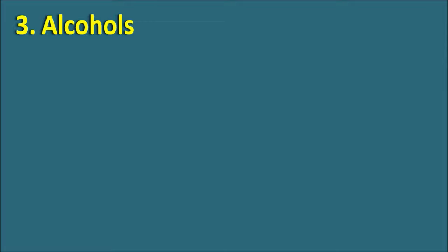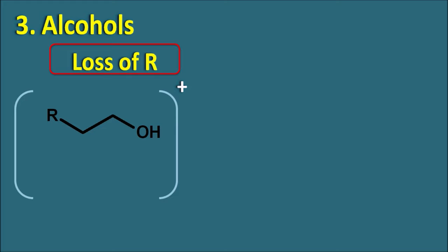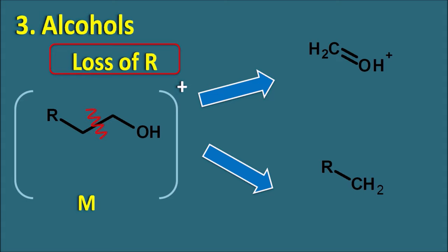Third one is the alcohols. Alcohols can undergo loss of the alkyl group — they undergo cleavage such that the other part of the group is removed, forming CH2OH+ along with the neutral fragment RCH2. We can calculate the m/z value of the fragment ion: CH2 is 14 and OH is 17 (16+1). So 14 plus 17 gives 31. An m/z of 31 may indicate an alcohol due to loss of the alkyl group. Neutral fragments are not detected in mass spectroscopy.